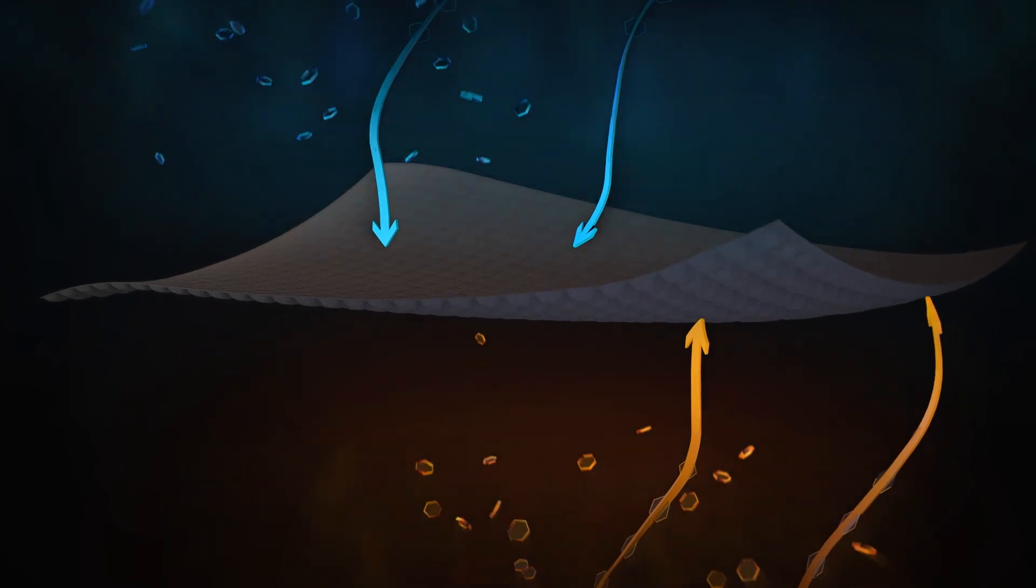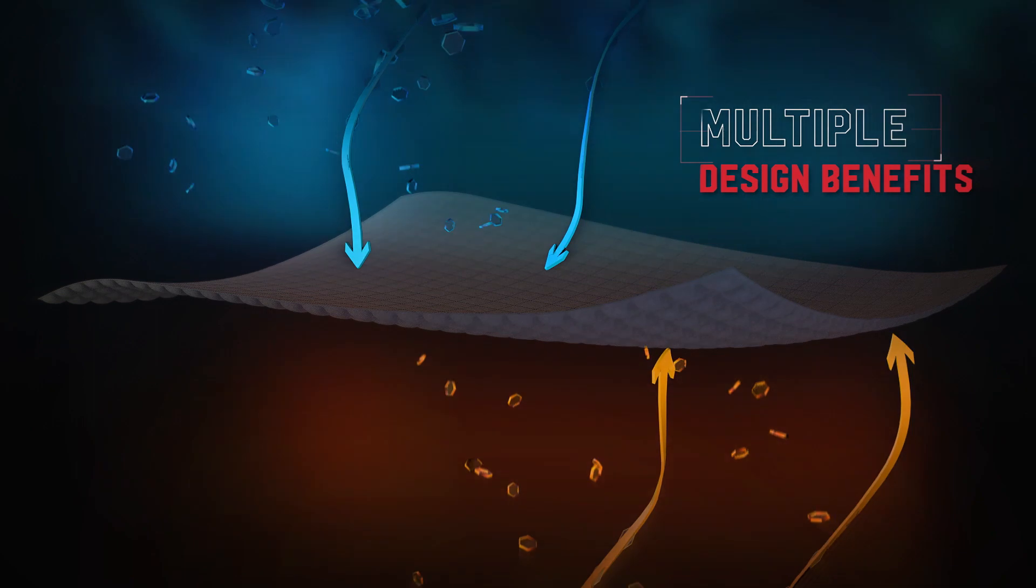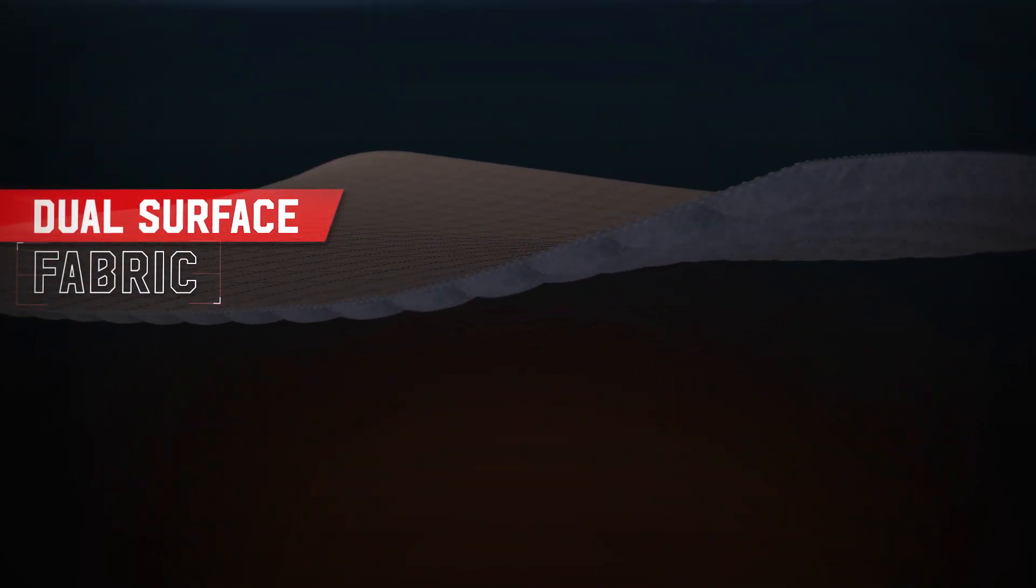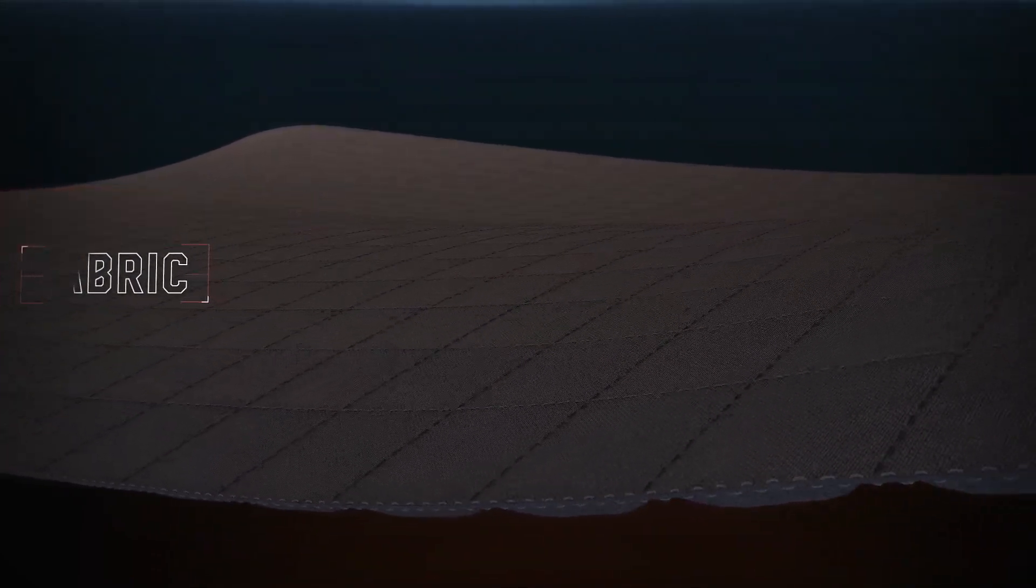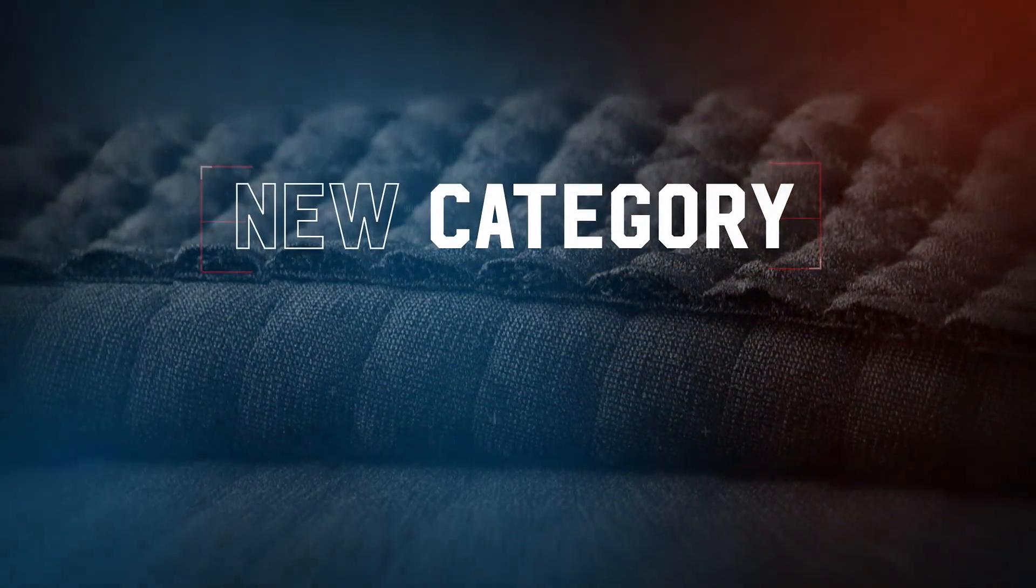And Power Air's design benefits don't end with warmth and microfiber retention. Its smooth surface reduces friction for less pilling, greater durability, and easy layering with other fabrics.